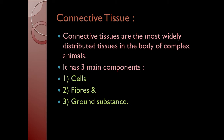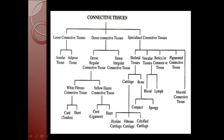The connective tissue has three main components: cells, fibers, and ground substance. These are the three main components of the connective tissue.